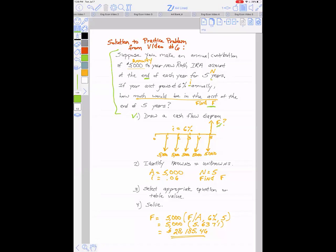Payments happen at the end of each year, interest rate of 6%. So again, identify our knowns and unknowns: annuity is $5,000, interest rate is 6%, number of years n is five, and find F, that's the unknown. Select appropriate equation or table value and solve. I've used the table value, the interest tables.